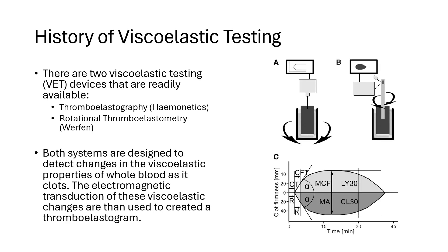Brief history on viscoelastic testing. The two available viscoelastic testing products on the market are TEG, produced by Heminetics, and ROTEM, produced by Werfin. TEG and ROTEM are based on the idea that the in vitro measurement of the viscoelastic properties of whole blood as it clots in real time can identify in vivo abnormalities in clot formation and dissolution under low shear conditions. Both systems report the amount of rotational force that is applied to a sensor suspended in a cup of whole blood.